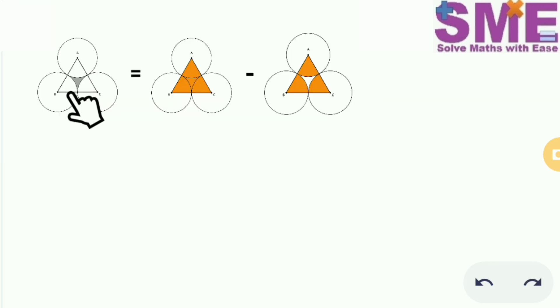The area of this shaded region which we need to find will be equal to the area of this equilateral triangle minus the area of these three sectors. Substituting the values we have already calculated, area of this equilateral triangle is √3 and the area of these three sectors is π/2.